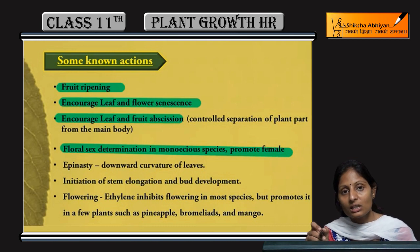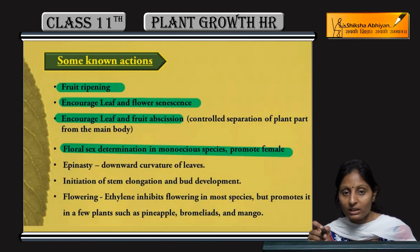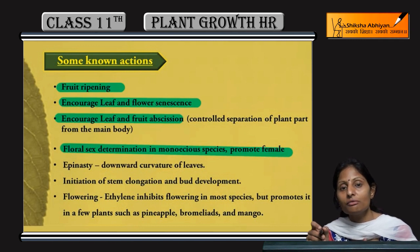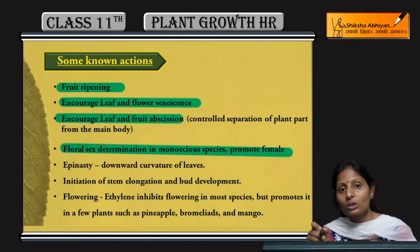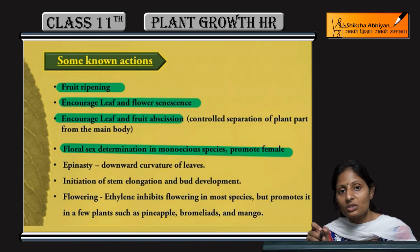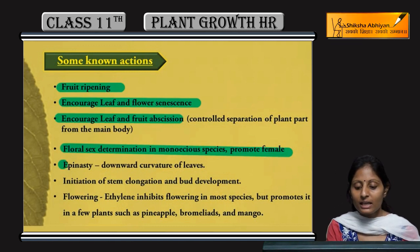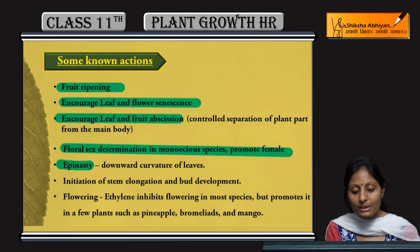In sex determination, if you induce any particular hormone and that hormone is ethylene, it will mainly produce female flowers and not male flowers. In this way, by inducing ethylene or other hormones, we can determine the sex of the plant.